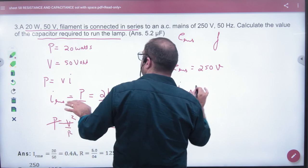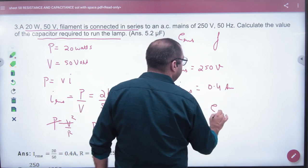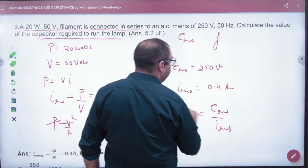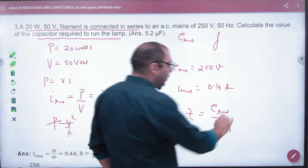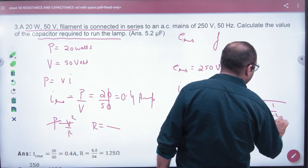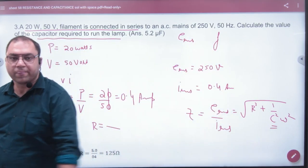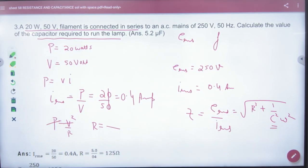The value of I RMS we have already solved - 0.4 amp, E RMS we have already solved. Then the value of impedance Z is under root of R square plus 1 by C square omega square. C we have to take out - all the values are known. We will take out the Z, we will take out the method.